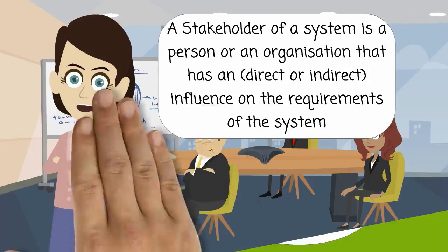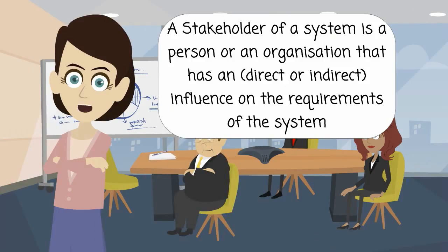Therefore, in summary, we can define a stakeholder of a system as a person or an organization that has a direct or indirect influence on the requirements of the system.